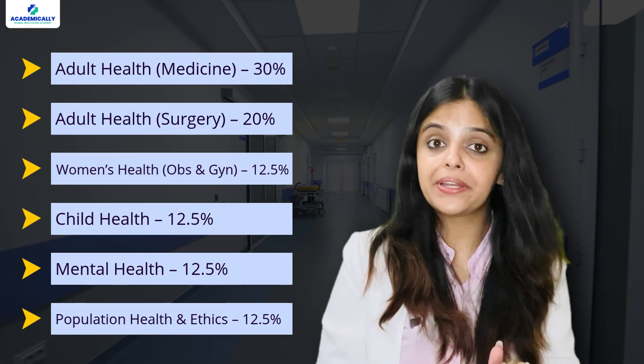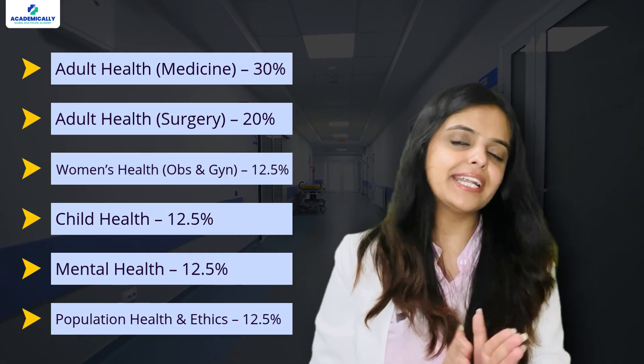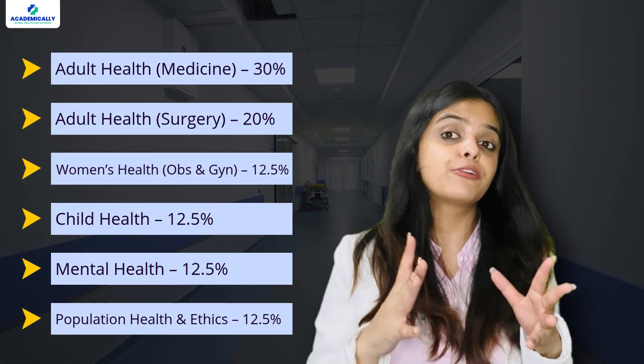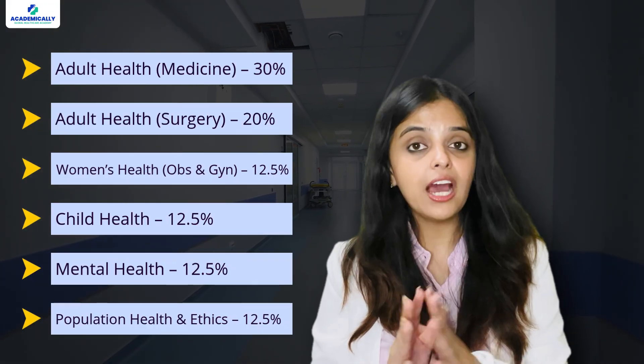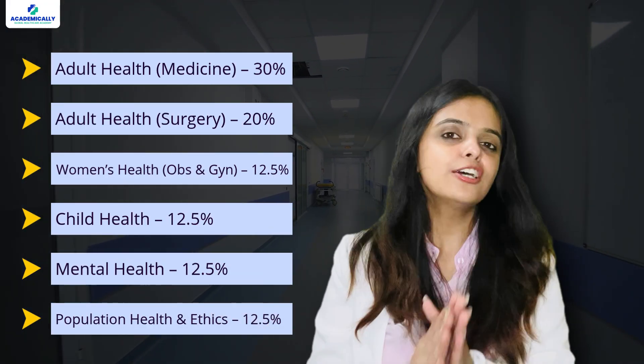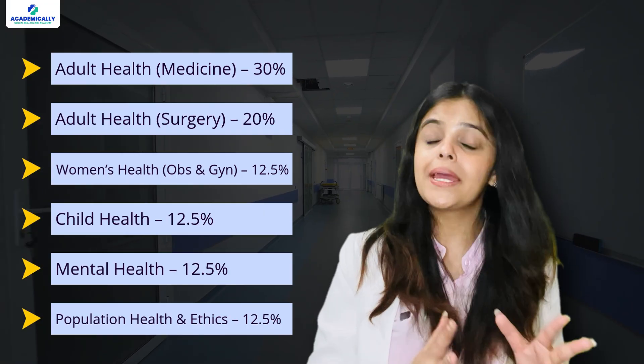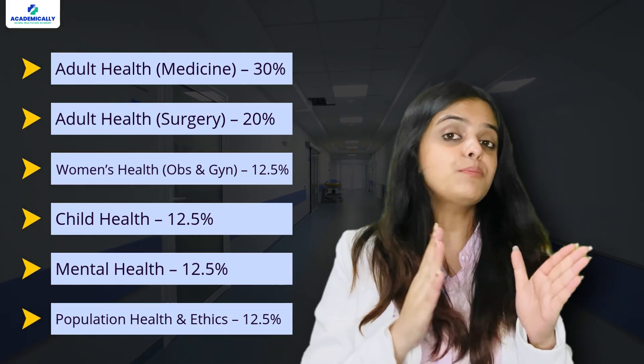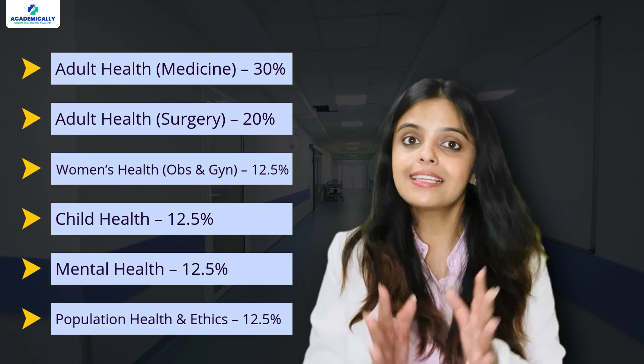All questions are based on real-life clinical cases relevant to the Australian healthcare system. The questions are drawn from six core subjects, each with a specific weightage. Here's the breakdown: Adult Health Medicine 30%, Adult Health Surgery 20%, Women's Health (OB and Gynae) 12.5%, Child Health 12.5%, Mental Health 12.5%, and Population Health and Ethics 12.5%.